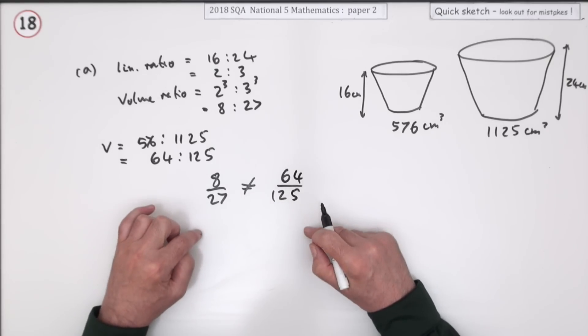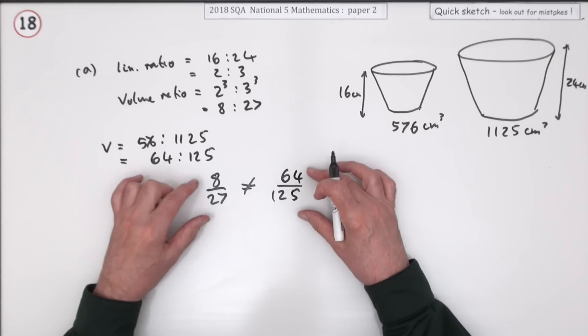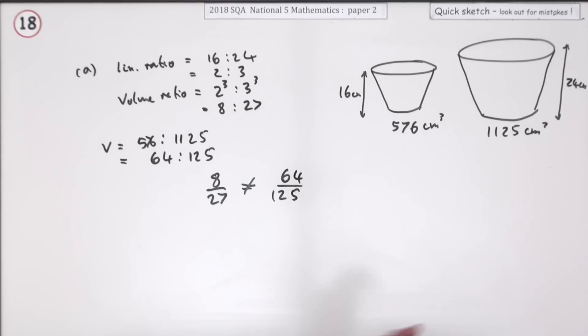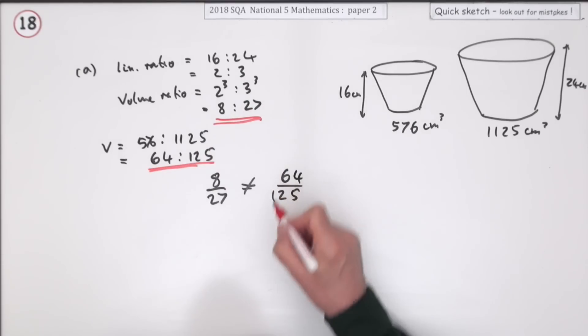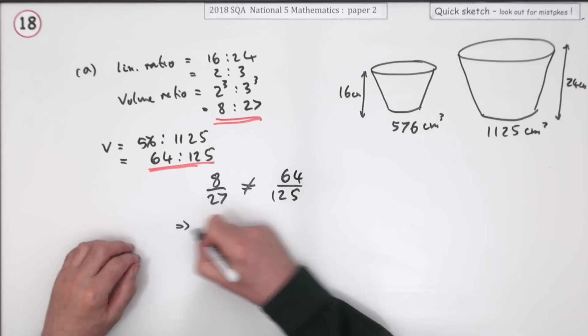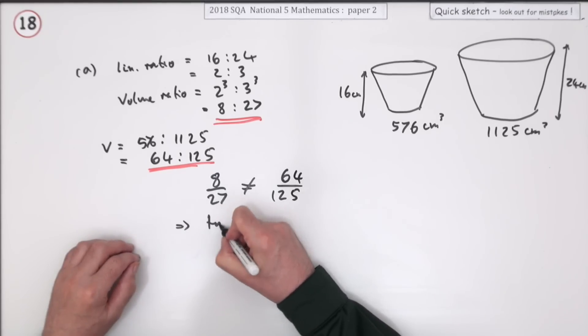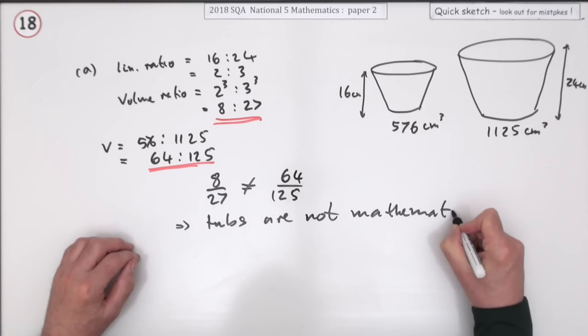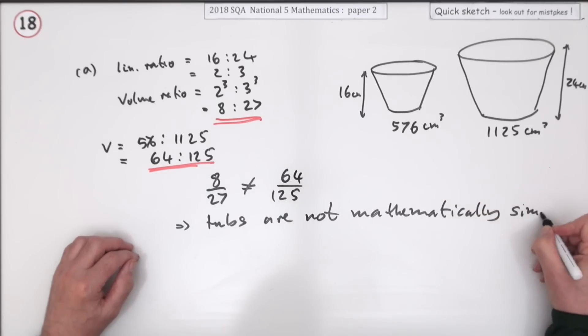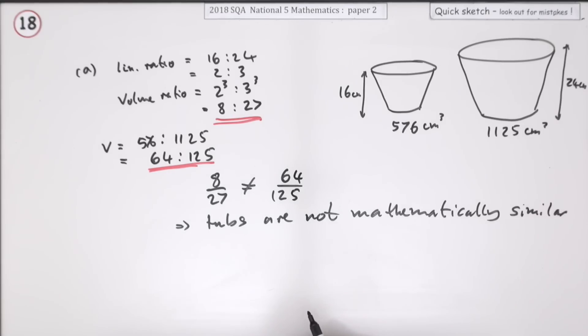You don't need to make them into the same denominator because they're both fully simplified. If that's the case, that means the tubs are not mathematically similar.